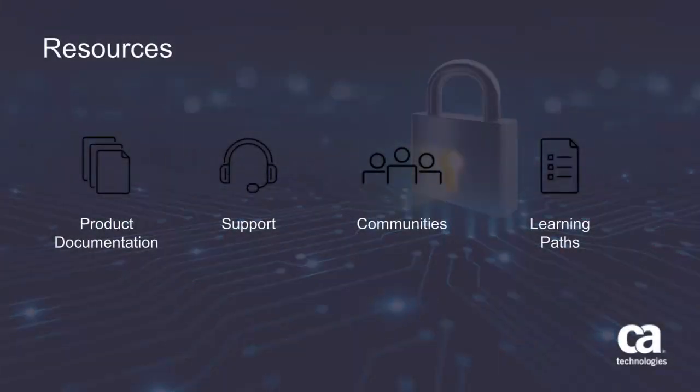For more detailed information about integration with CA Atomic One Automation Platform for event management, visit ca.com. From there, you can visit product documentation, support communities, or see the learning paths. Alternatively, visit docops.ca.com and search for 'Integrate with CA Atomic One Automation Platform.' Visit docs.atomic.com for CA Atomic One Automation Platform documentation. Thank you.